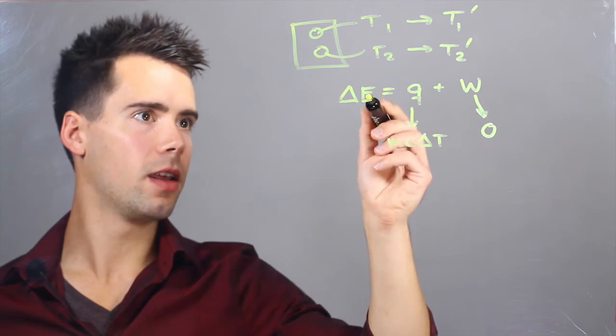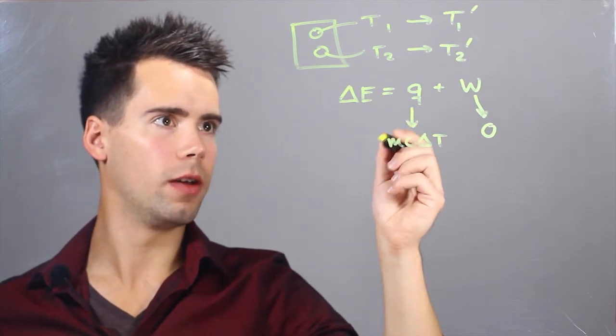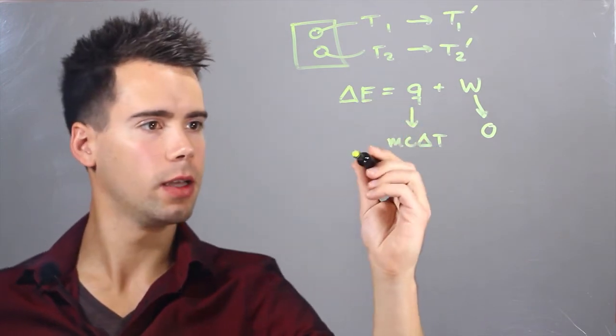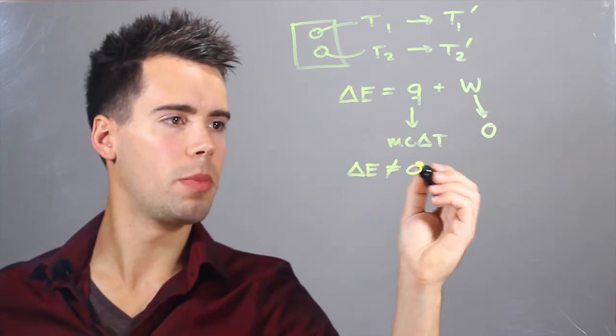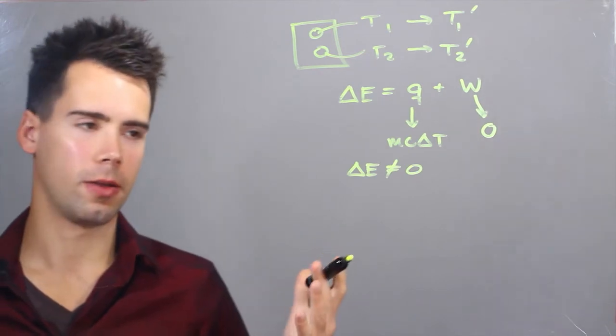And we find that if there is a chemical equation involved in this, some chemical process, delta E will be non-zero. So it might be positive, it might be negative, it just depends on how you think of it.